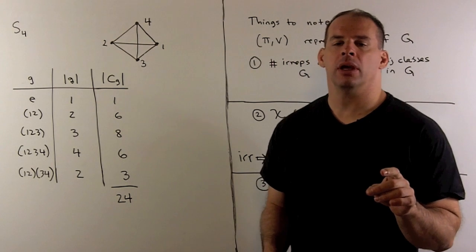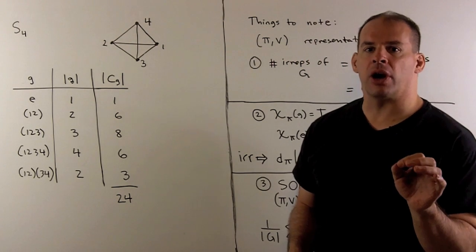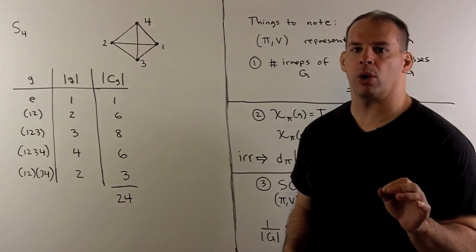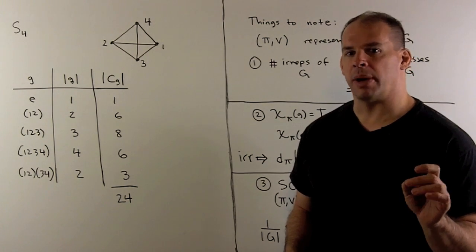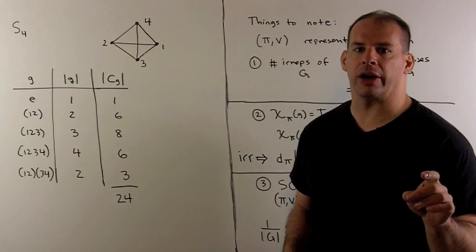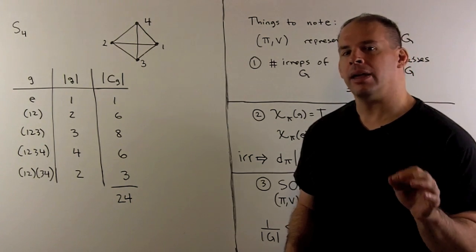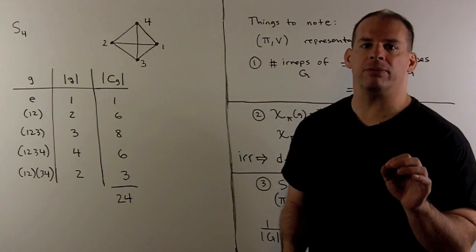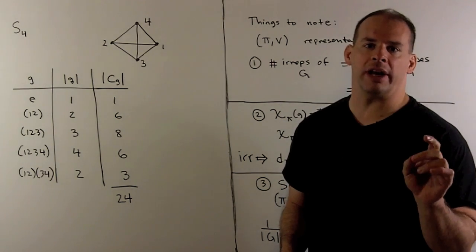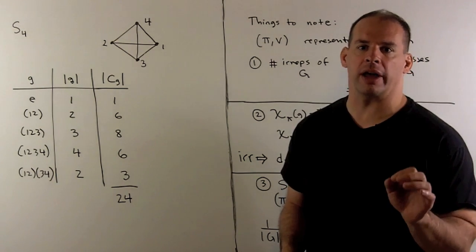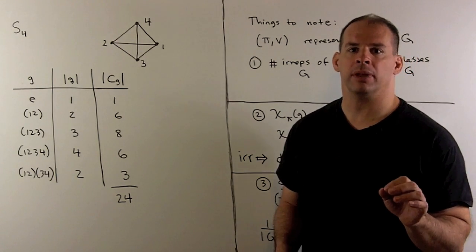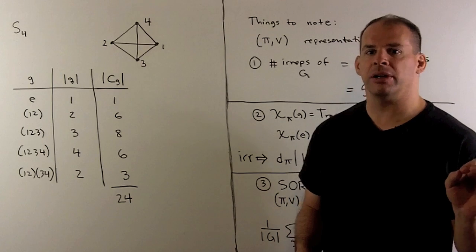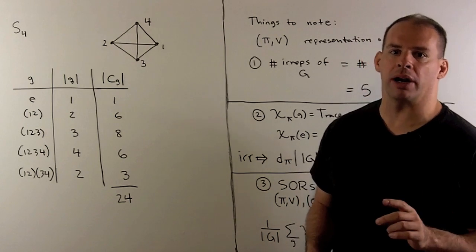For this talk, we build from scratch the character table for S4, the symmetric group on four letters, and we'll use that table to get the character table for A4, the alternating group on four letters. Then we'll have an application for tensor products.